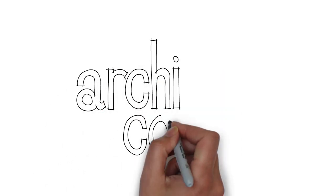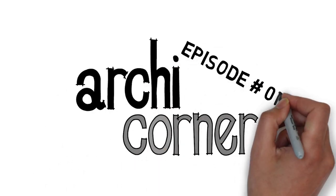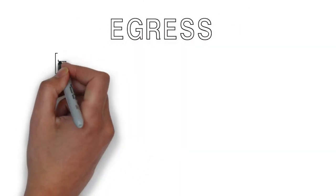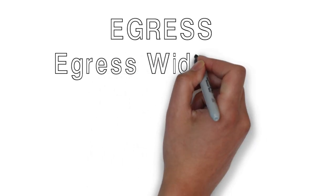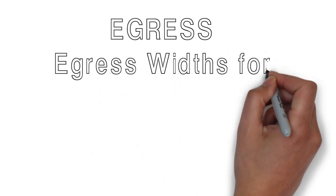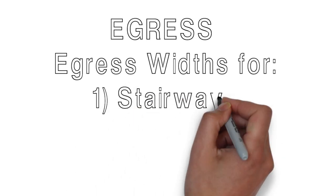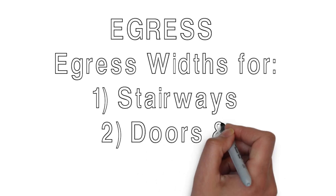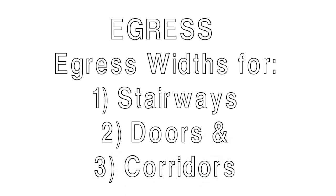Hello and welcome to Archicorner. This is episode number 11. Today we will continue the subject of egress. Specifically, we're going to be talking about egress widths. There are various items that the widths apply to, but in this video we're only going to focus on a few things: egress widths for stairs, doors, and corridors. So let's get started.